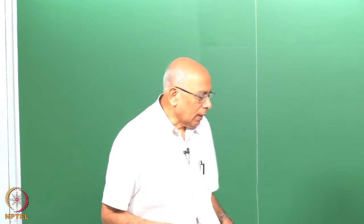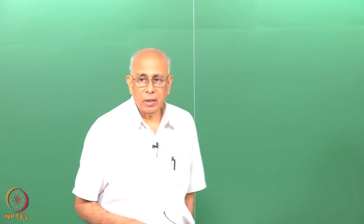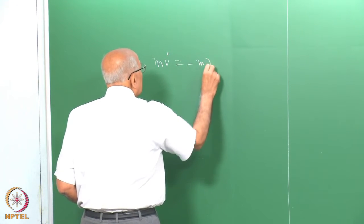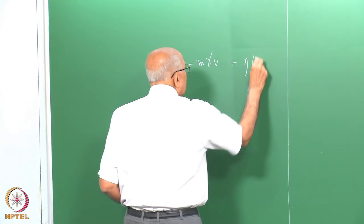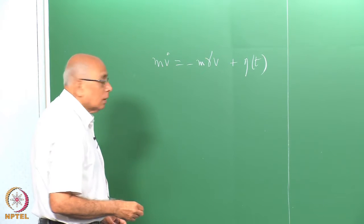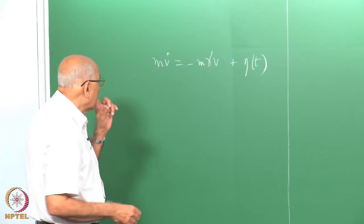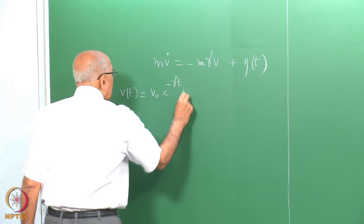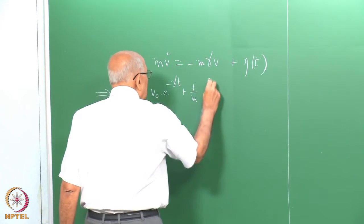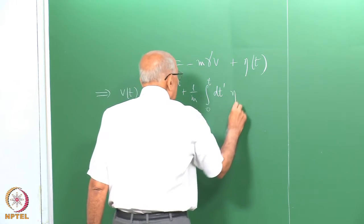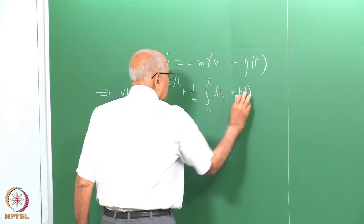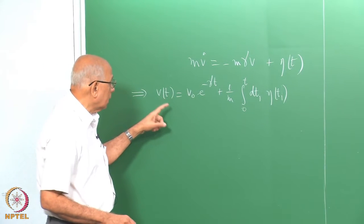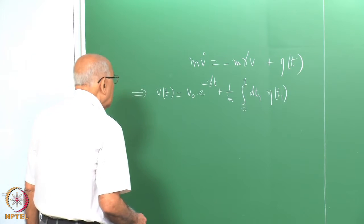We had got to the stage last time where I mentioned that if you took a more realistic equation of motion for the Brownian particle, namely m v-dot equals minus m gamma v plus eta of t, where this was noise, then we might now get a more physical result for the mean and the mean square. You solve this equation: v of t equals v-naught e to the minus gamma t plus 1 over m, integral from 0 to t of eta of t-prime dt-prime. That is the formal solution with initial condition v(0) equals v-naught.